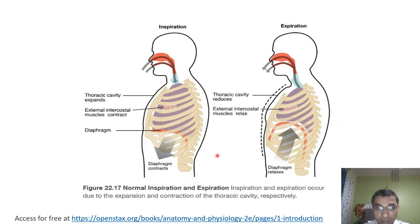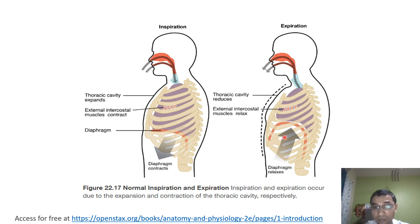During inspiration, the diaphragm moves downward and contracts, and the external intercostal muscles contract, causing expansion of the thoracic cavity. During expiration, the diaphragm moves upward and relaxes, the external intercostal muscles relax, and the volume of the thoracic cavity reduces. You should compare both the inspiration and expiration processes to learn more.